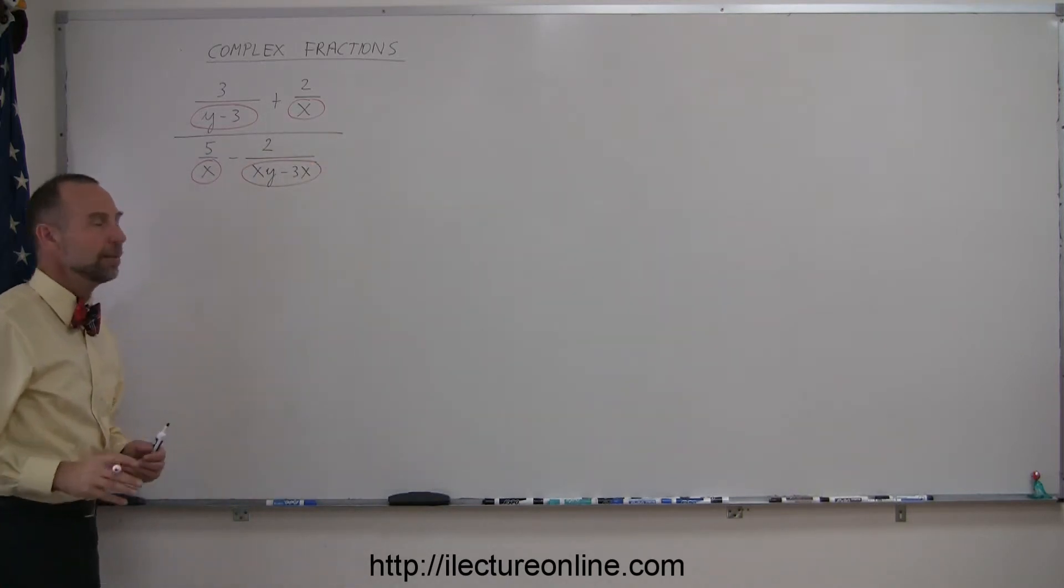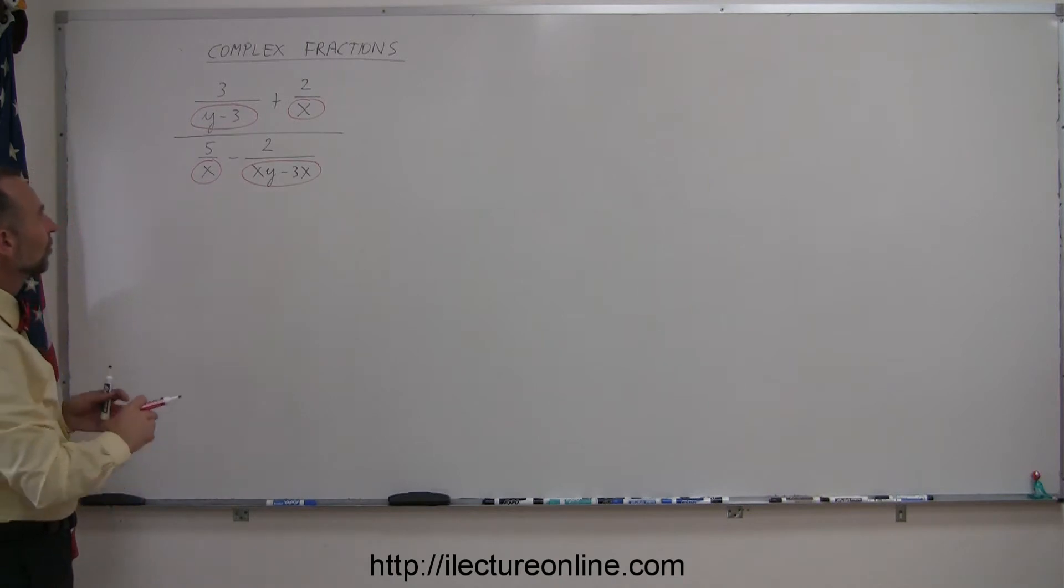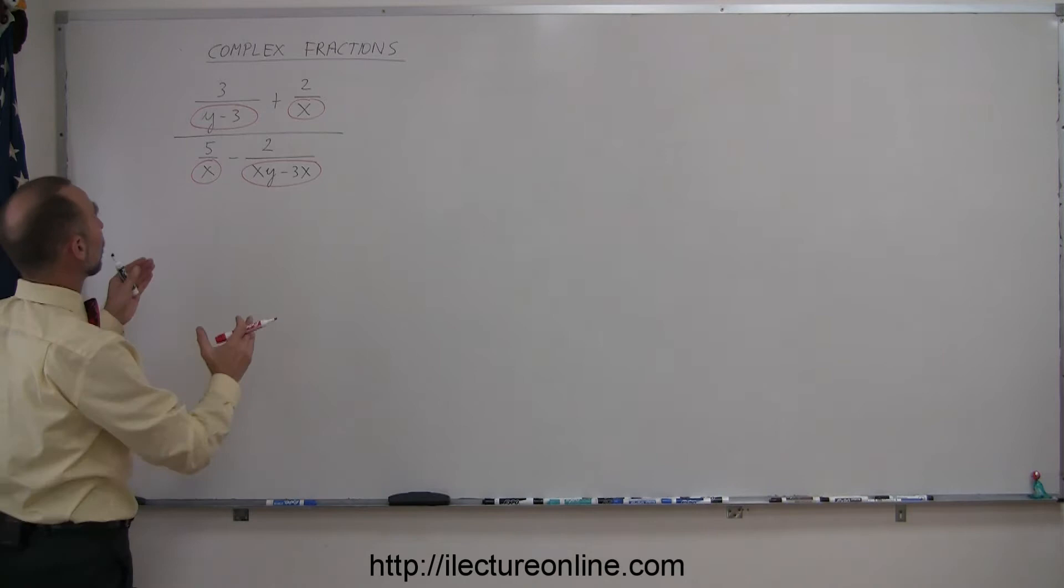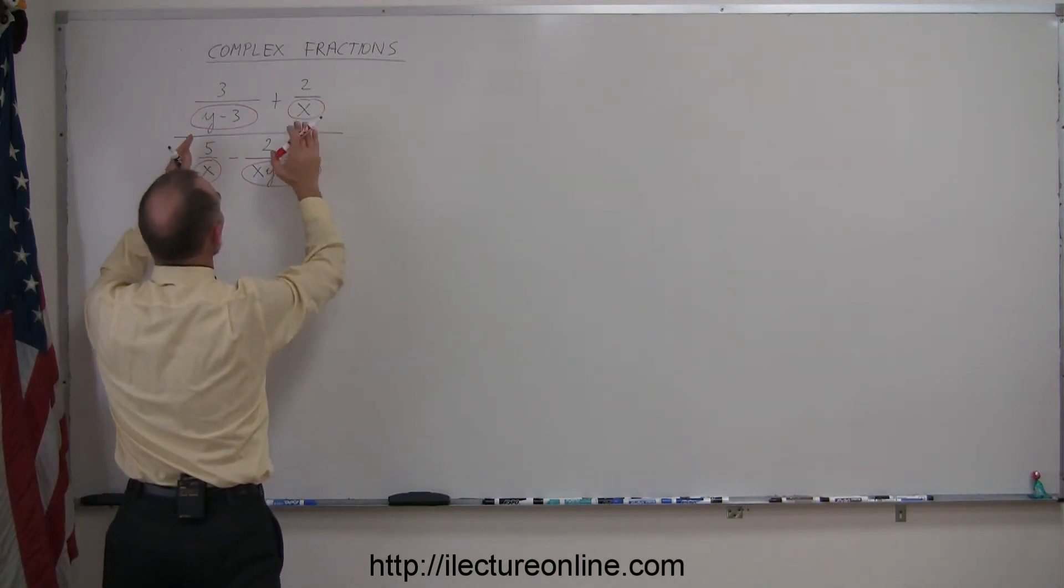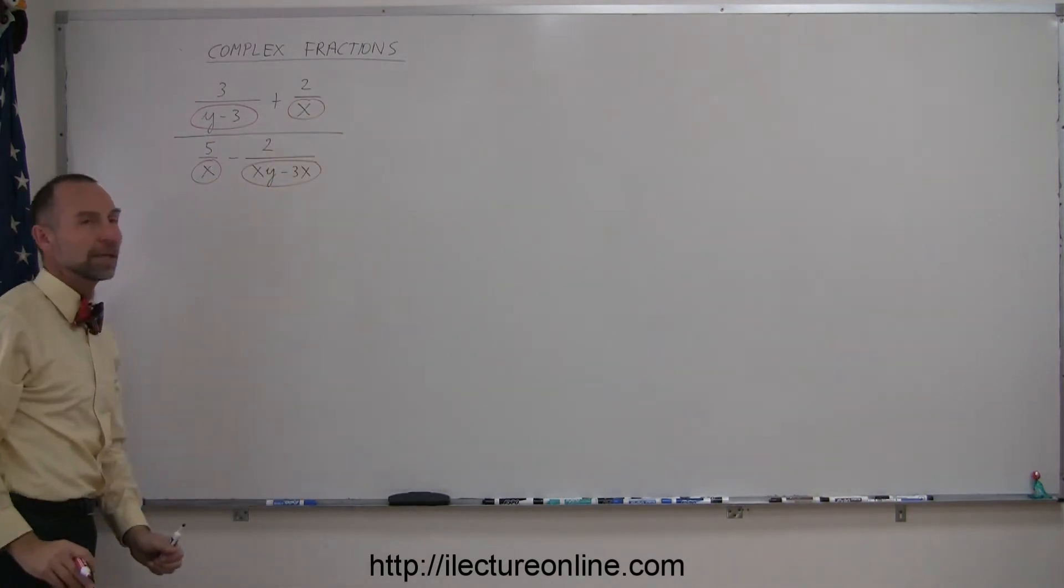Now to simplify the problem in an easy fashion, I would like to multiply the whole numerator and whole denominator by the lowest common denominator of all those denominators.